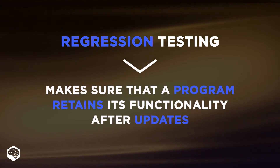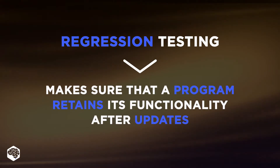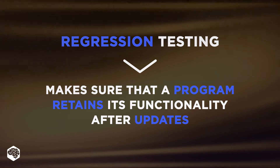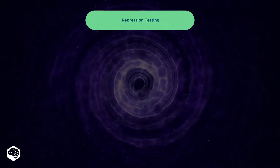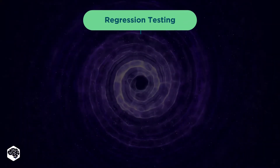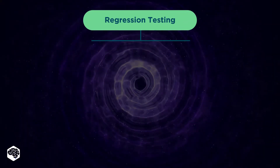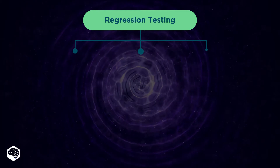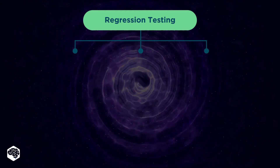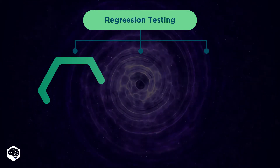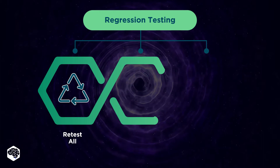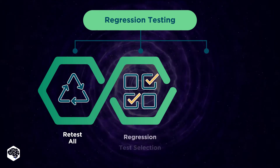Regression testing aims to make sure that a program retains its core functionality after new updates. Regression testing uses test cases that have already been used. You need to re-execute them to check if the new changes cause bugs or issues in functionality.